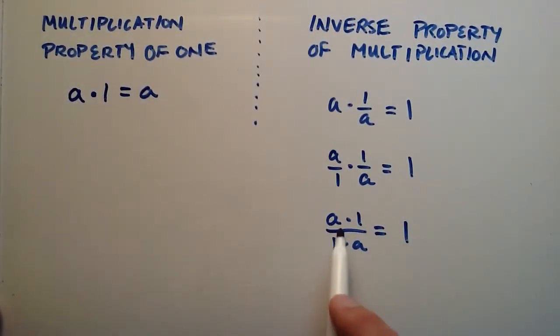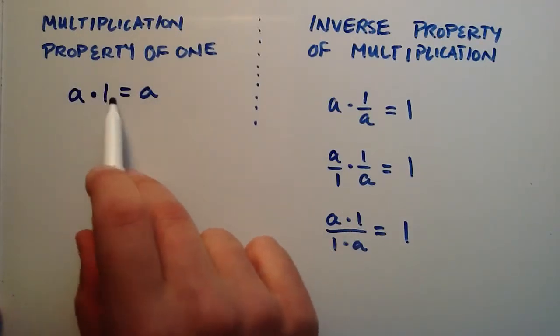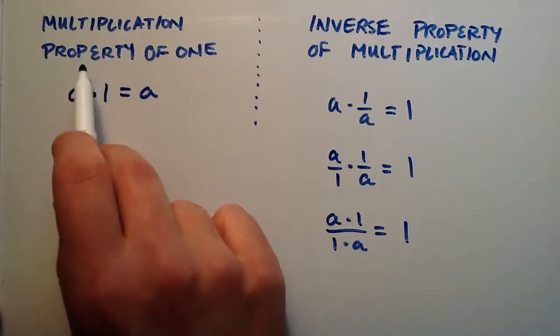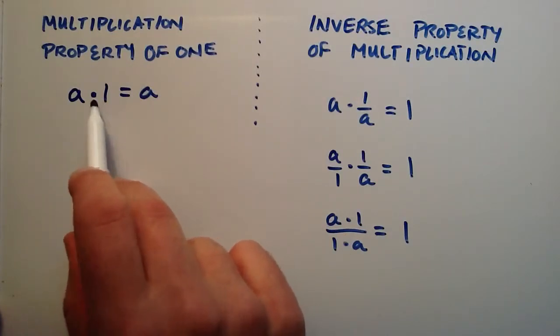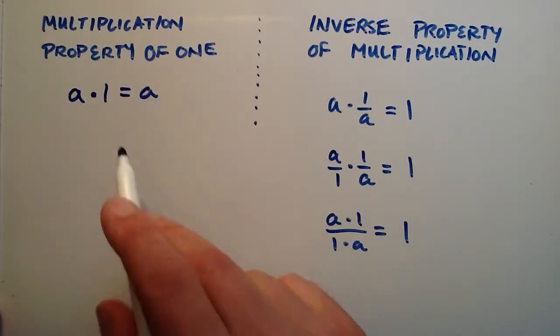And now we basically have both the numerator and the denominator in this form right here. And so from the multiplication property of 1, we see that a times 1, or 1 times a, is simply equal to a.